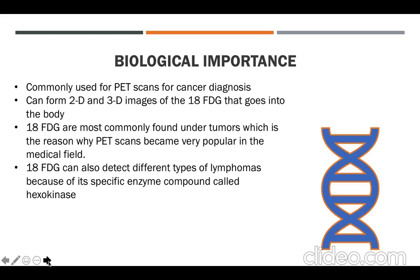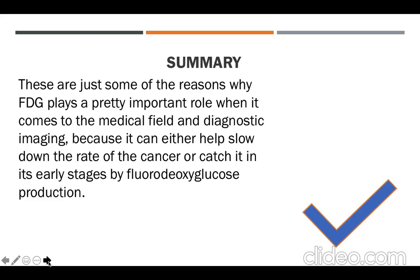18FDG can also detect different types of lymphomas because of a specific enzyme compound called hexokinase. To sum it all up, these are just some of the reasons why FDG plays a pretty important role in the medical field and diagnostic imaging, because it can either slow down the rate of cancer or catch it in its early stages through fluorodeoxyglucose production.